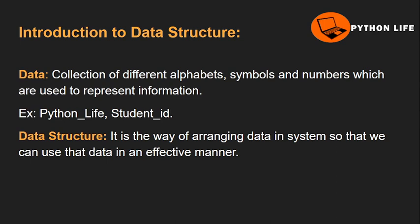If we represent information, we use different alphabets, symbols and numbers — we use data. For example, 'Python Live'. In Python Live, there are different alphabets and a special character. Next example: student ID. We use an identity number for student ID. So, that is also data.